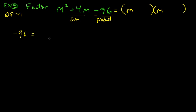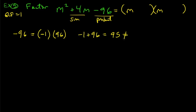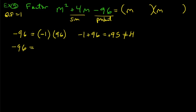Since the product is −96, one number must be negative and one positive. When you add a small negative number plus a large positive number, you get a positive result — which is what we want (positive 4). So the smaller number should be negative. Let's start: −1 × 96 → sum = 95, not 4.